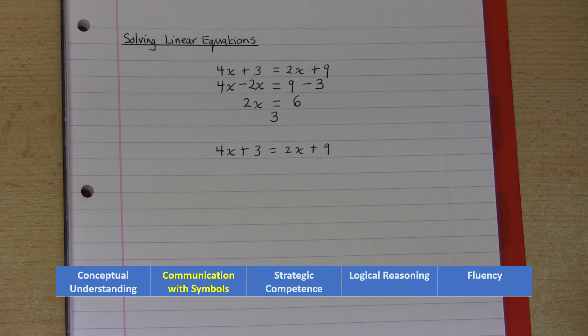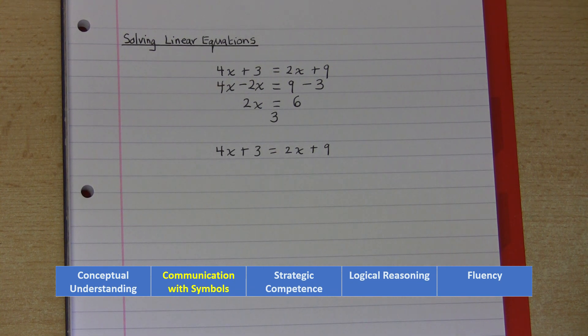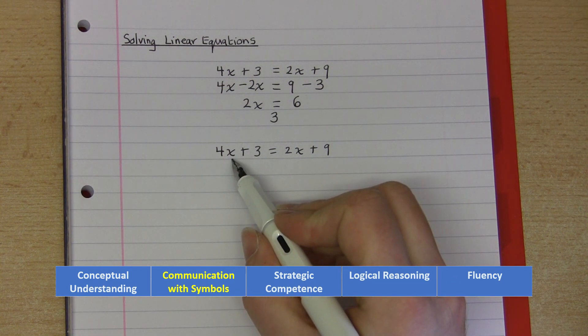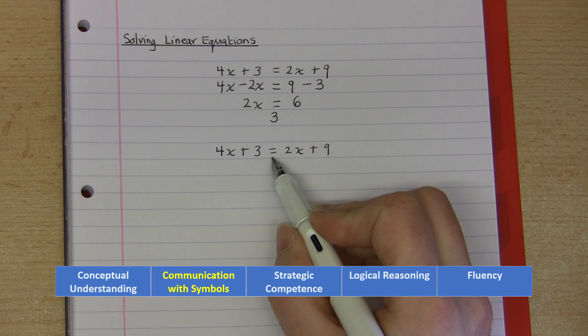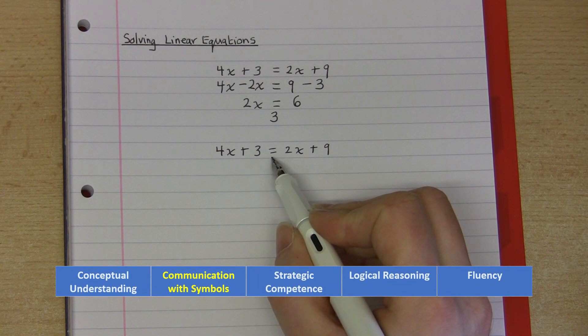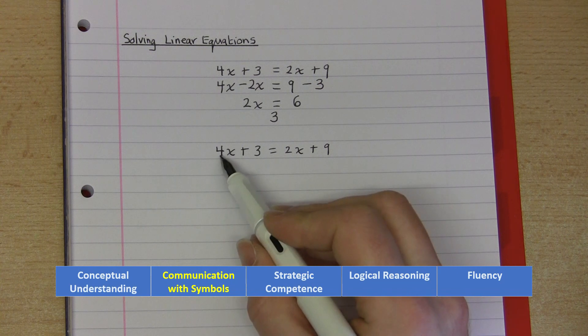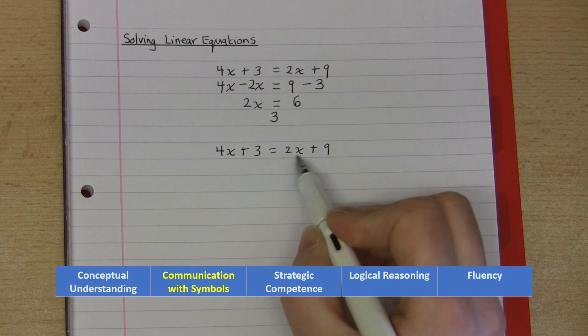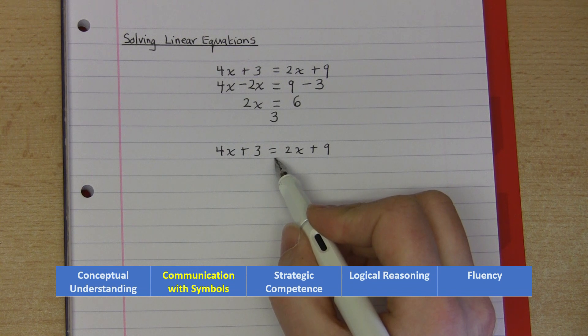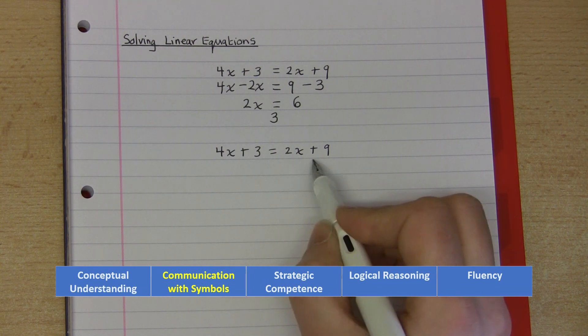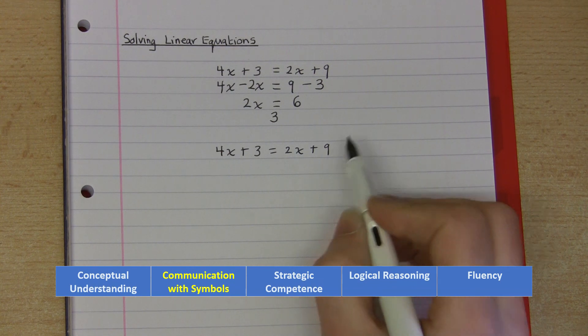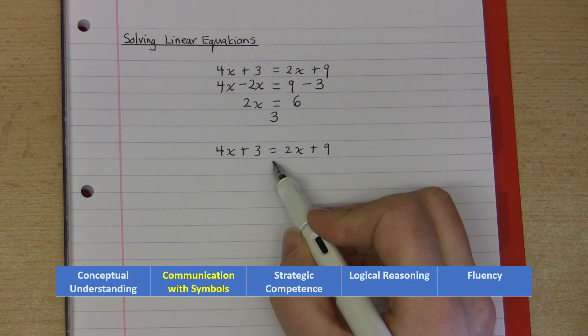Moving on to communication with symbols, I've already talked about the important symbol x here, a mathematical variable. We also have an important symbol in the middle of the equation. Now this is sometimes incorrectly referred to as the makes symbol, and we hear that 4x plus 3 makes 2x plus 9. This is always the equal symbol. The left hand side of the equation should be viewed as being equal to the right hand side. And actually there is some Welsh context here. It was a Welshman, Robert Ricord, in 1557 who was the first person to use this particular symbol as the equal sign.